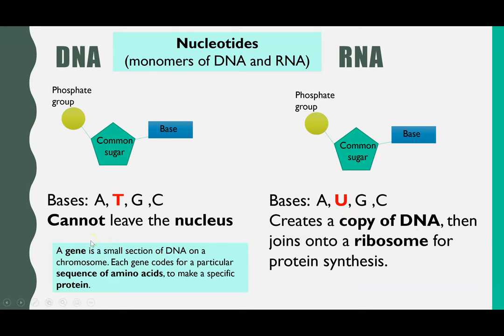When we say the RNA creates a copy of DNA, it only copies a small section to code for one protein, and that is what a gene is — a small section of DNA which codes for the sequence of amino acids to make a protein. So RNA copies one gene from the DNA, then leaves the nucleus to be used to make the protein.